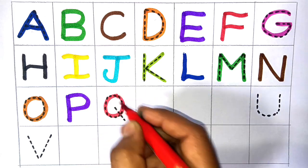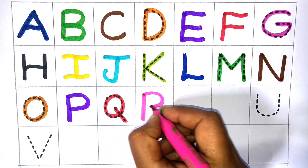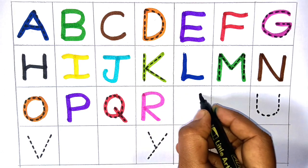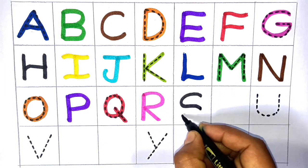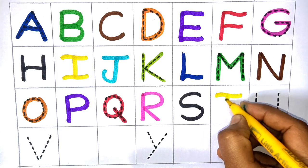Q for queen, next. R for red, next. S for sun, next. T for sun, next.